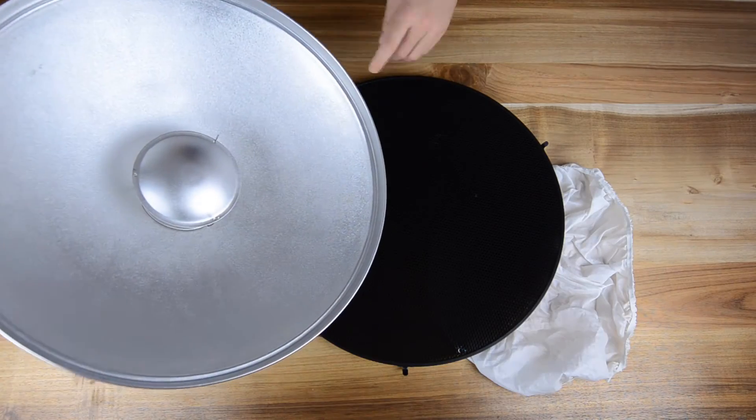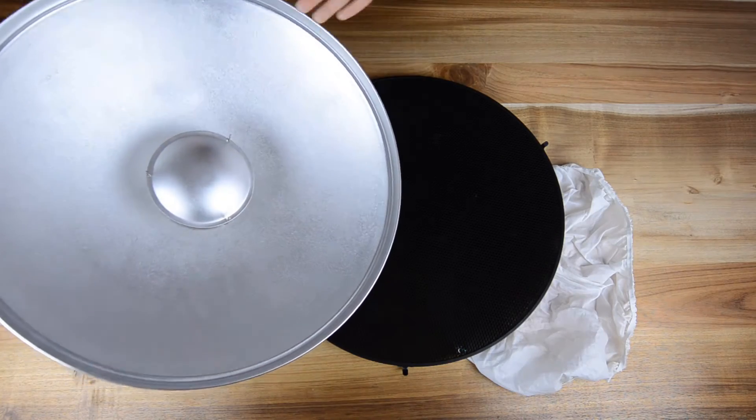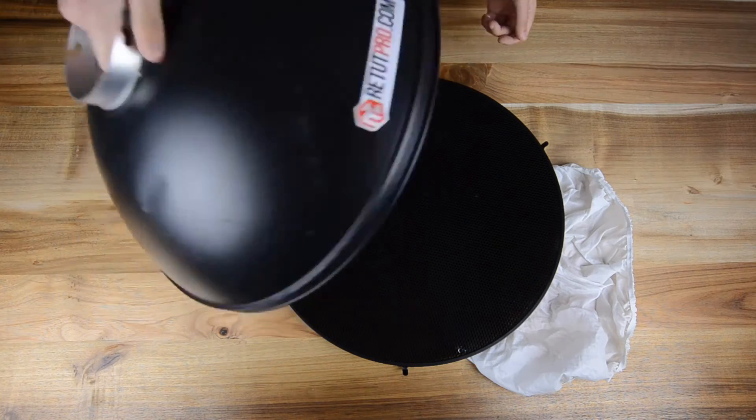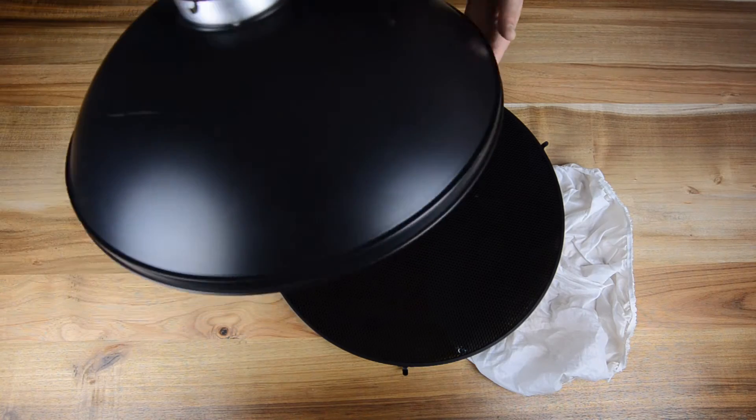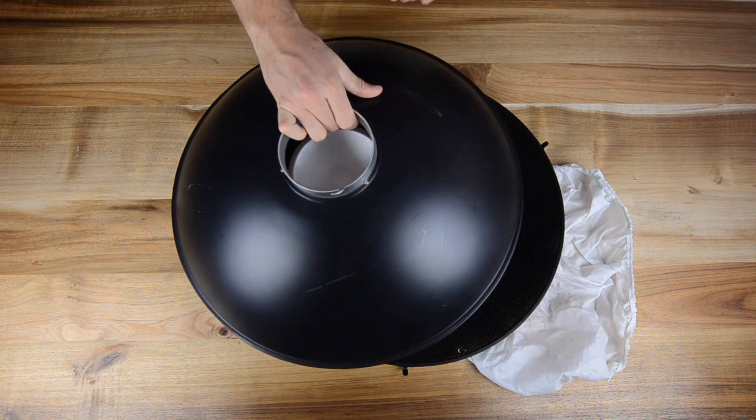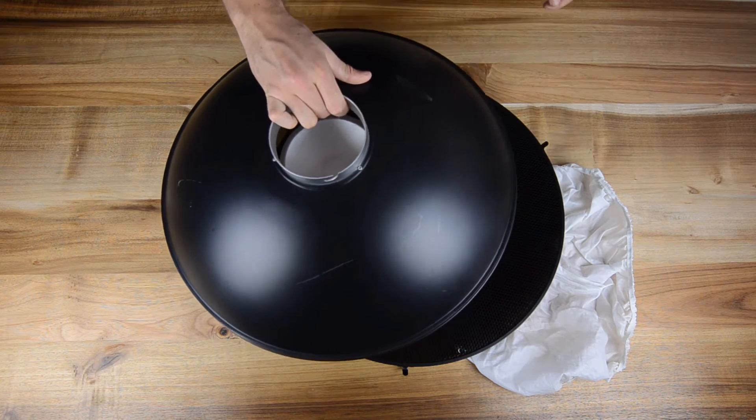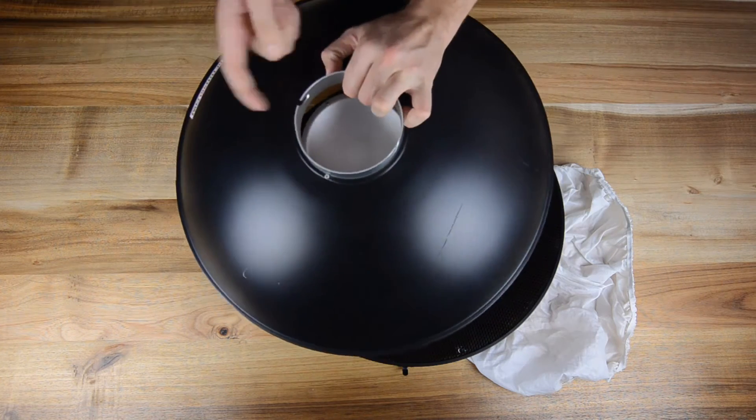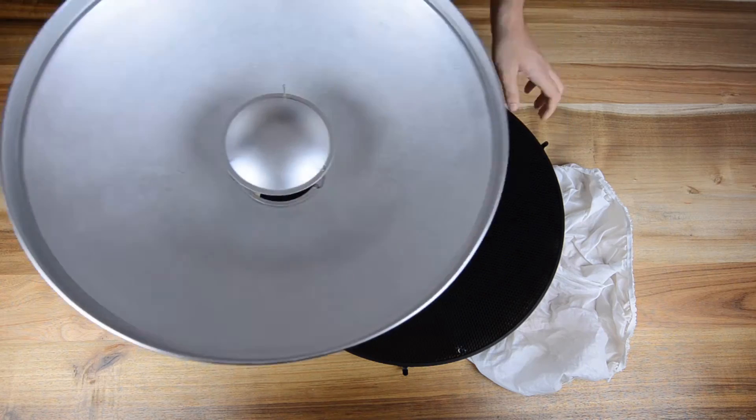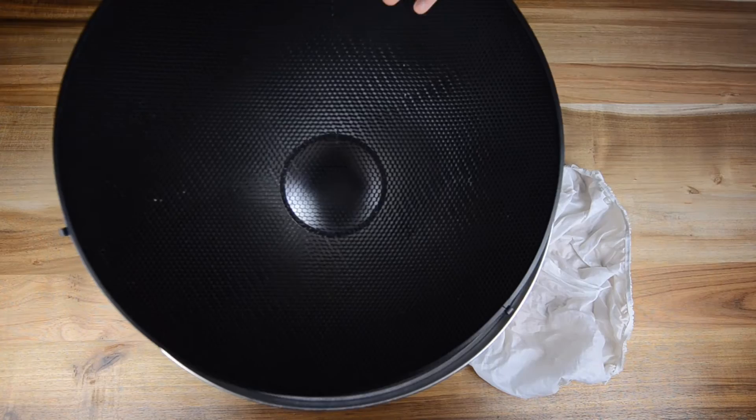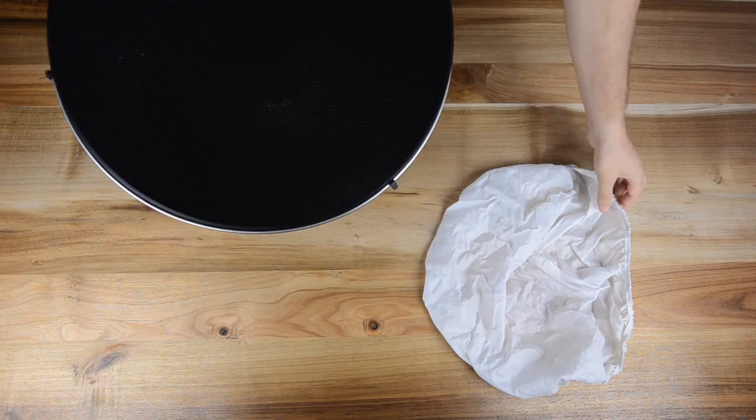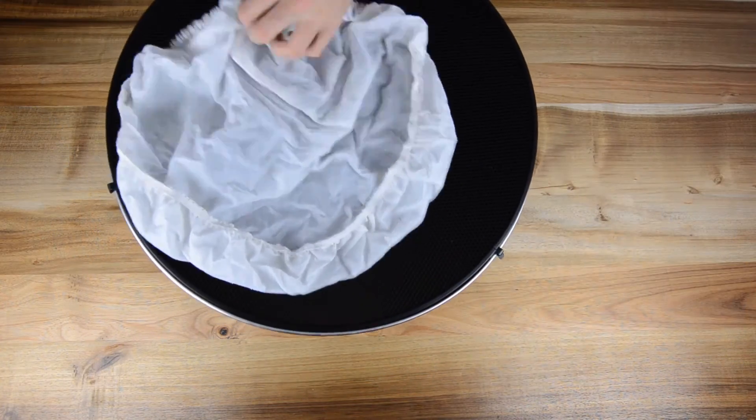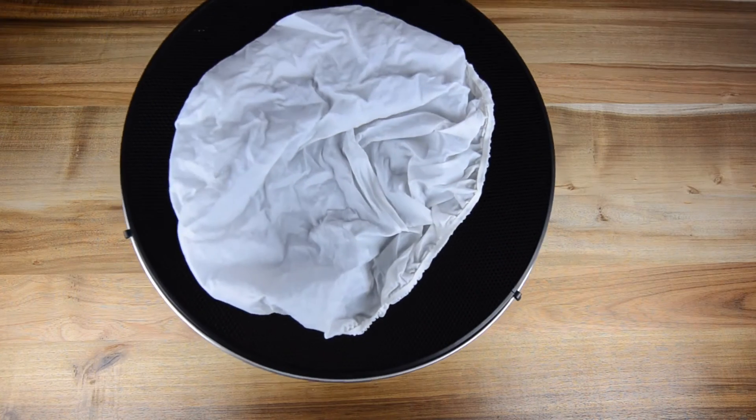Then over here we also have a beauty dish, a silver inline beauty dish. As you guys can see, this will be used almost 90% of our shoots. Coming with the speed ring for Elinchrom mounts. So if you have something different, have a look at this. With silver inline as said before. Also extra here, a grid just to narrow light which works really nicely, and coming here with a diffusing material just to pop on top of that.